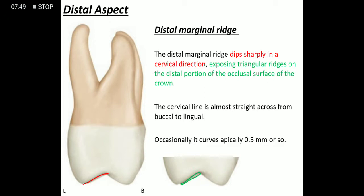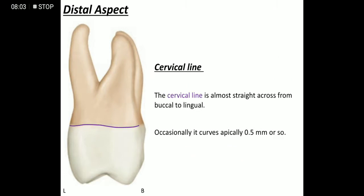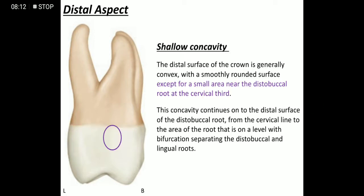Considering the distal marginal ridge, it shows a sharp dip in the cervical direction which reveals the triangular ridge behind it on the occlusal surface. The cervical line is almost straight — opposite of what was seen on the mesial aspect — where the curvature is apically placed and just 0.5 mm. Again there is a shallow concavity, but somewhat smaller than on the mesial aspect.